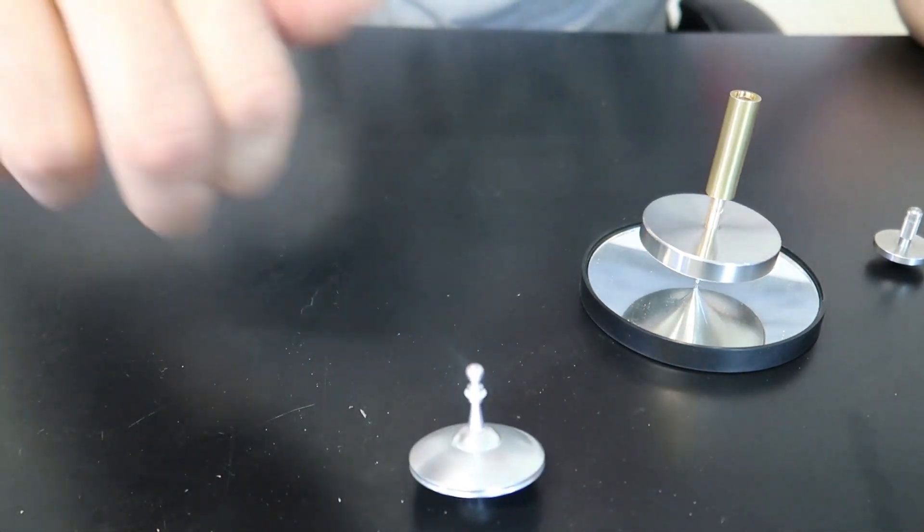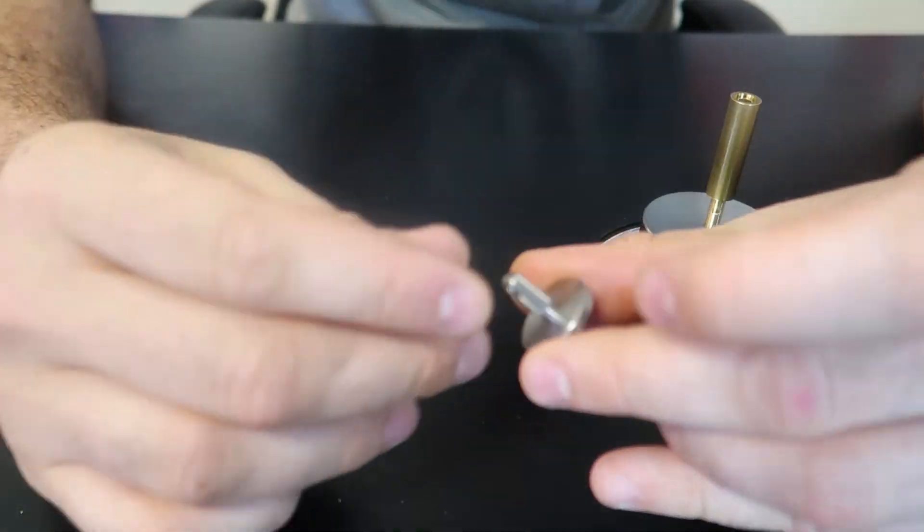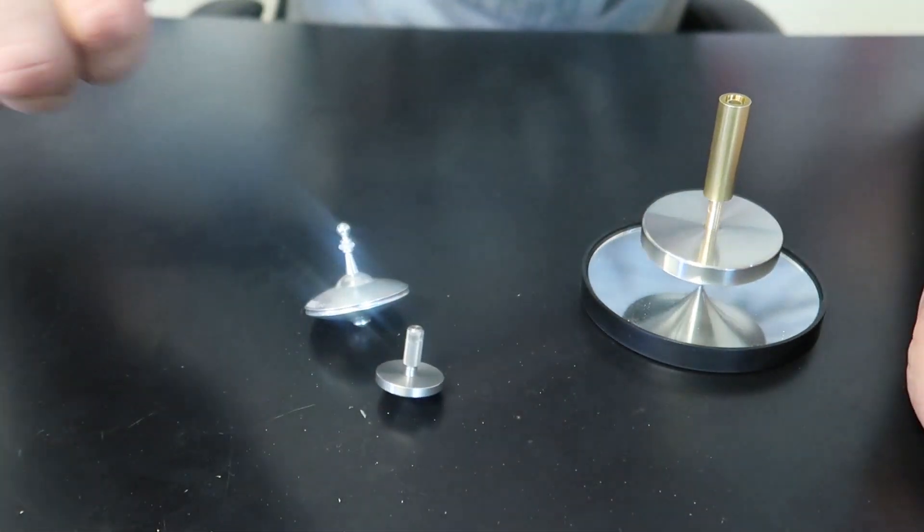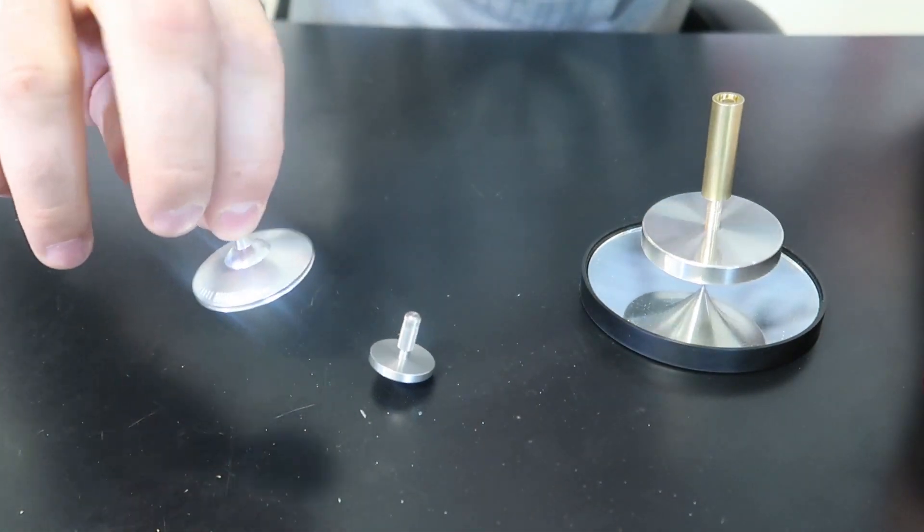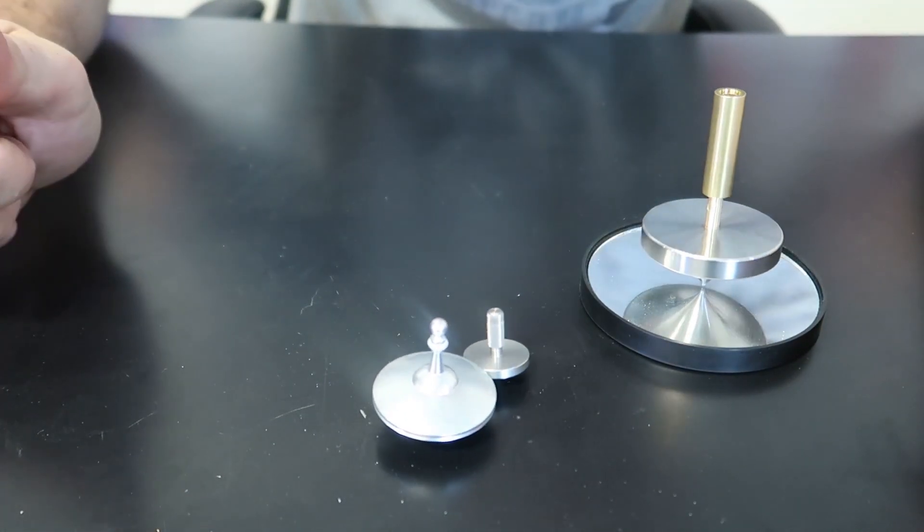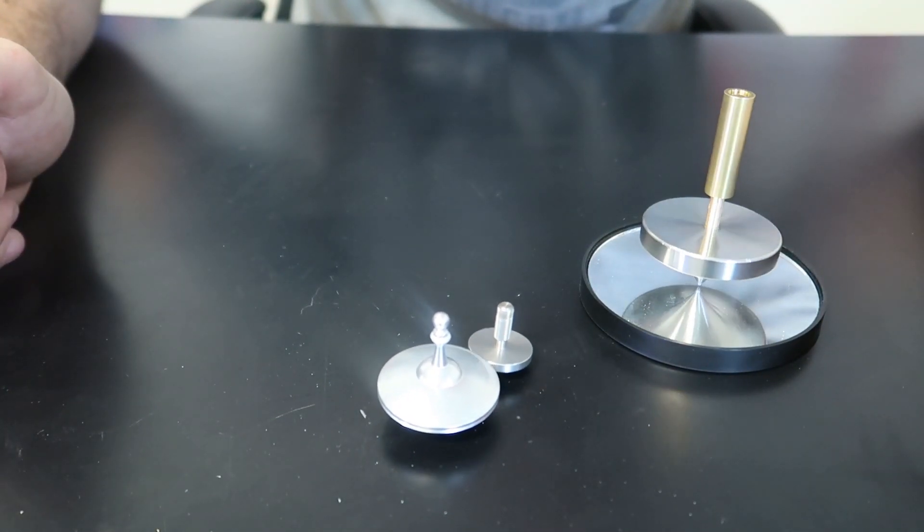Much bigger, easier to spin. But this one have these ridges, pieces, so it's almost easier to spin it. This one doesn't have ridges, so it's a little bit harder to spin. But they both pretty nice.